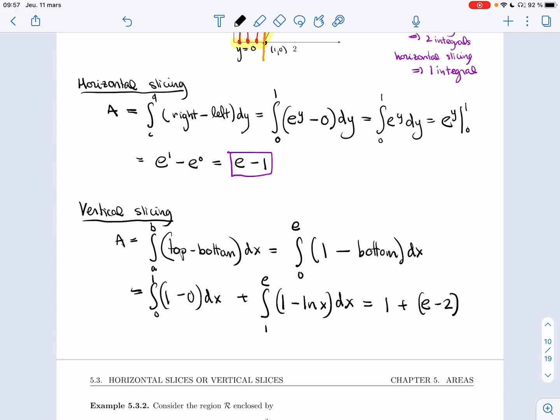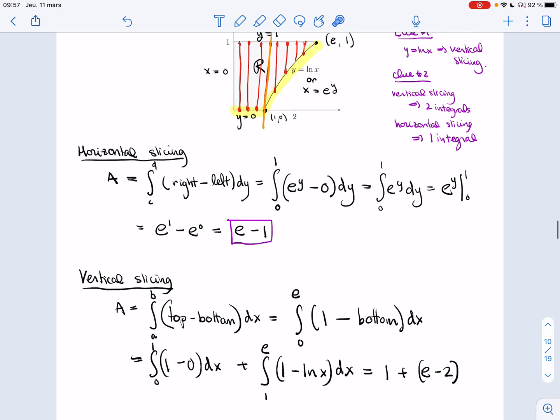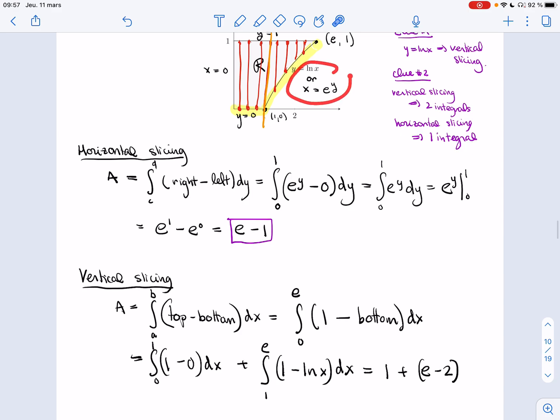But I will not compute it because first of all, this integral is much harder than that one. You need integration by parts. But you can see setting it up is slightly harder using vertical slicing because you have two different integrals to set up. Horizontal slicing, the difficulty is that you have to isolate x.